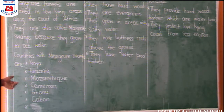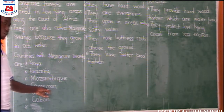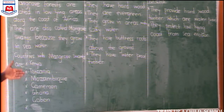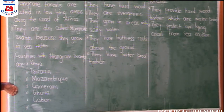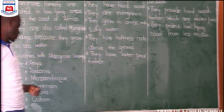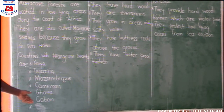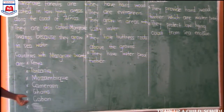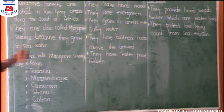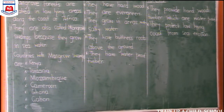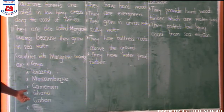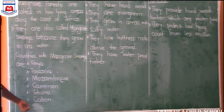Ghana lies in West Africa along the coast, and those coastal parts have what we call salty water. Another country we have is Gabon. Gabon also has mangrove forests. When you check from your atlases, you are going to find other countries like Nigeria.